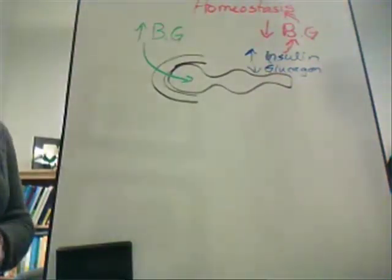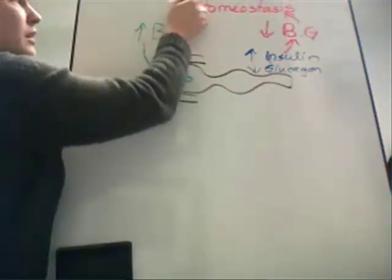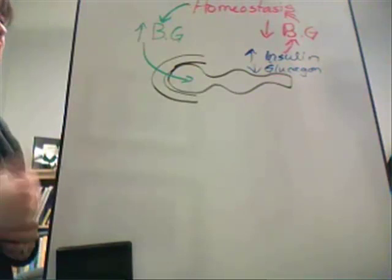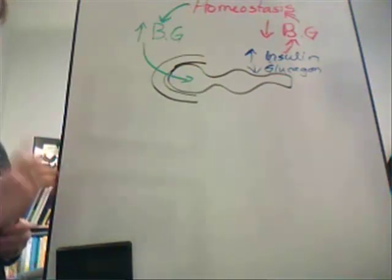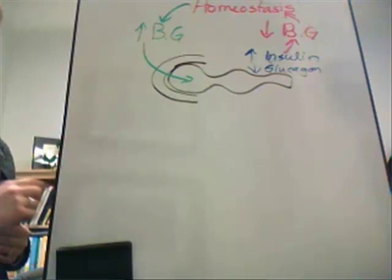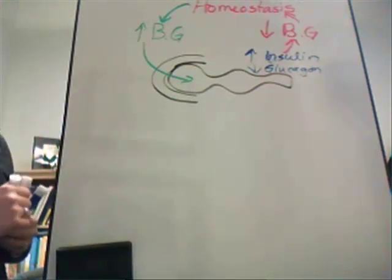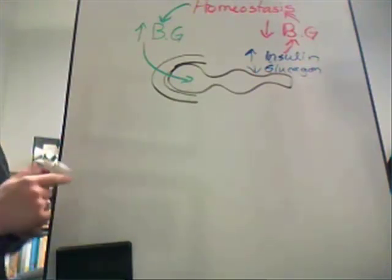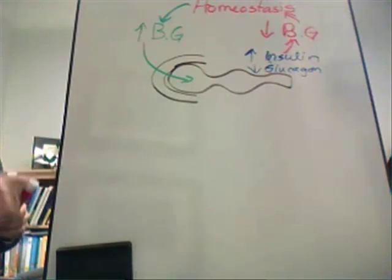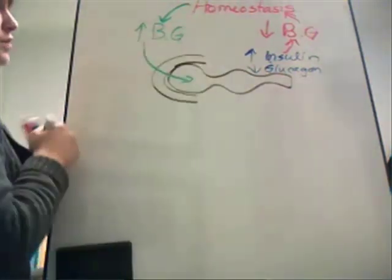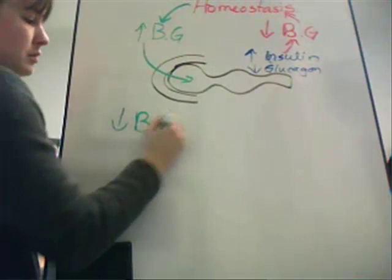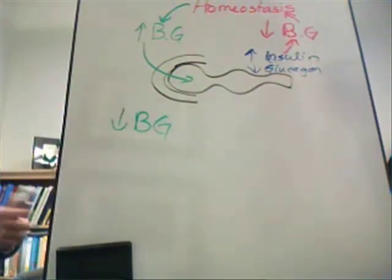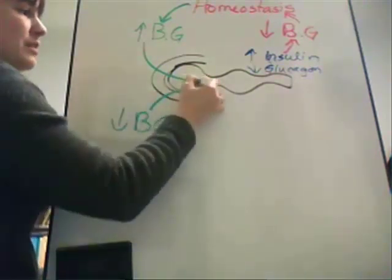Any time we get away from homeostasis because blood glucose levels have elevated, the body promotes the production of more insulin to help decrease the amount of blood glucose. However, blood glucose levels may also be too low. So if blood glucose levels continue to decline and we get a depression in blood glucose levels, the pancreas needs to do the opposite effect.